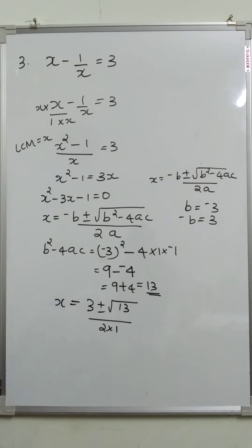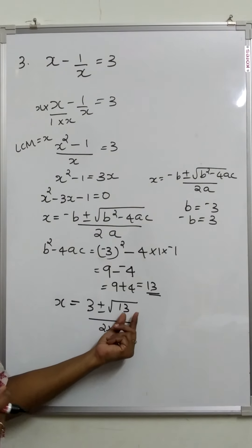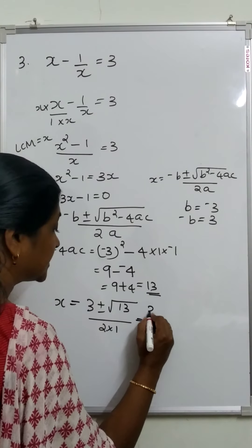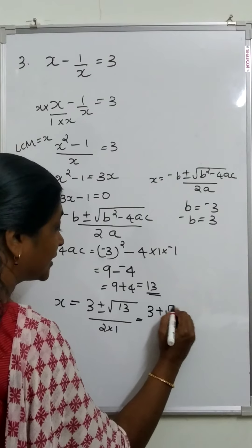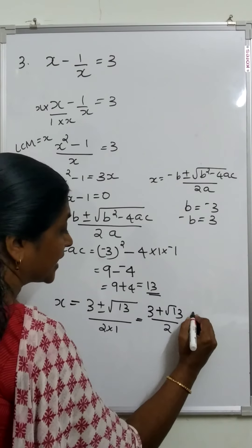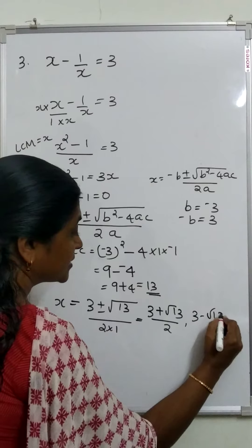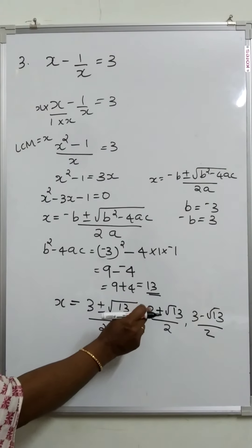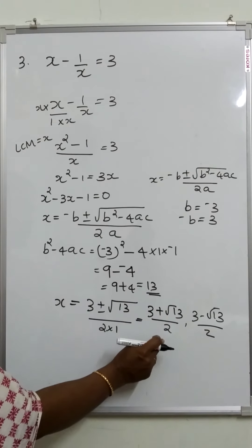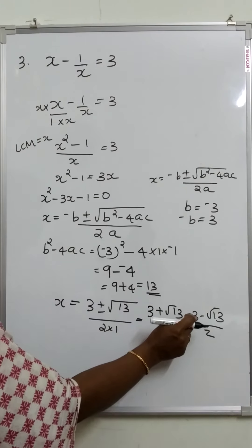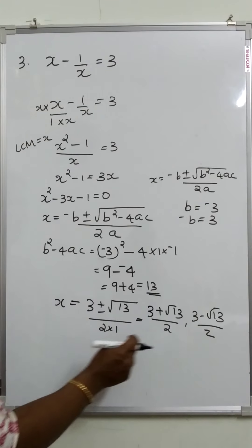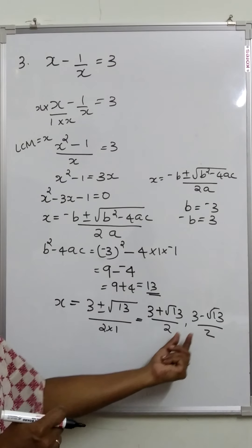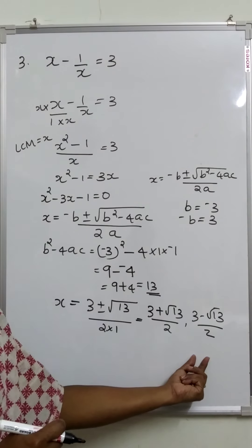Since root 13 cannot be simplified further, we split into two equations. The first root is 3 plus root 13 by 2 and the second root is 3 minus root 13 by 2. So x has two values: x is equal to 3 plus root 13 by 2, and 3 minus root 13 by 2.